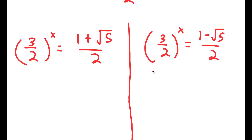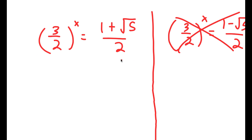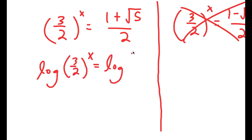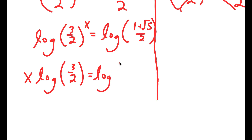We can already cancel out the right-hand equation, because 1 minus the square root of 5 is going to be a negative number, and you can't take the power of a positive number and make it equal a negative number, so that equation wouldn't work. The only equation left is 3 over 2 to the power of x equals 1 plus the square root of 5 over 2. To solve this, I'm going to take the log on both sides, giving x times log 3 over 2 equals log of 1 plus the square root of 5 over 2. Dividing both sides by log 3 over 2, I get x equals log of 1 plus the square root of 5 over 2, divided by log of 3 over 2.